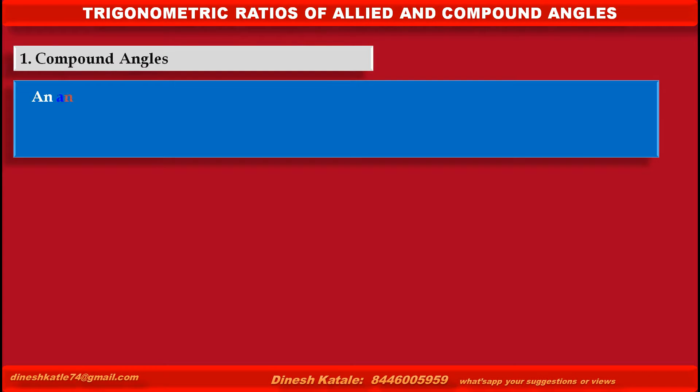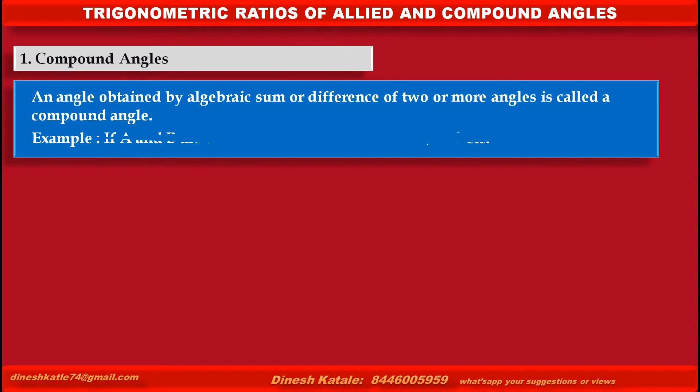An angle obtained by algebraic sum or difference of two or more angles is called a compound angle. For example, if A and B are two different angles, then A+B, A-B, etc. are compound angles.